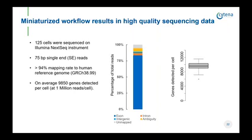Finally, we pooled 125 cells and sequenced them on an Illumina NextSeq instrument. We obtained high-quality sequencing data: more than 94% of the reads mapped to the human reference genome, and on average almost 10,000 genes were detected in each individual cell at 1 million reads. This demonstrates that our system can generate high-quality sequencing data from single cells, and since the entire protocol is based on 384-well plates, this setup should allow for the preparation of at least 1,000 to 2,000 single cell libraries in a single day if streamlined.